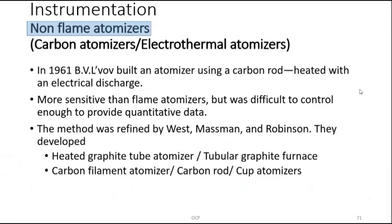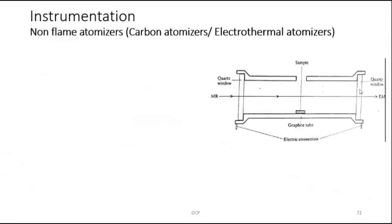This method was refined by West, Massman, and Robinson, who developed two equipments: the heated graphite tube atomizer, also called a tubular graphite furnace (its construction is like a furnace), and the carbon filament atomizer, also called the carbon rod or carbon cup atomizer.